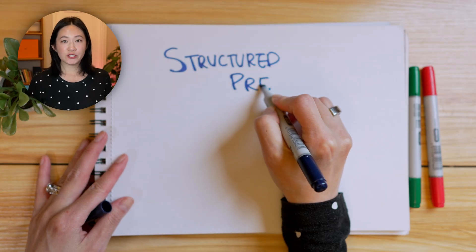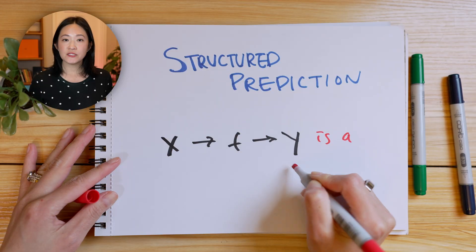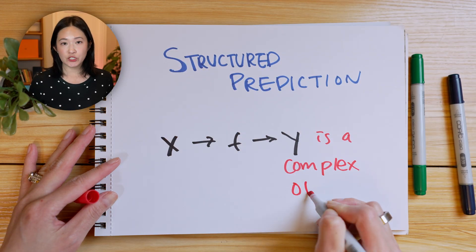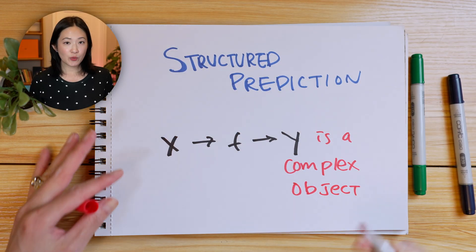Structured prediction involves predicting complex outputs like sentences or images. For example, in machine translation, the system predicts the entire sentence structure, not just individual words.